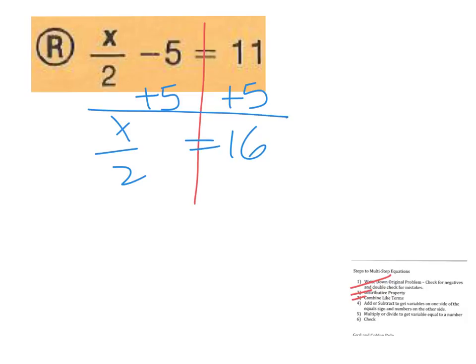Now some of you right here go, oh, 8. No, you've got to finish showing me the work here. We're going to multiply off that 2, multiply off that 2, and x equals 32.